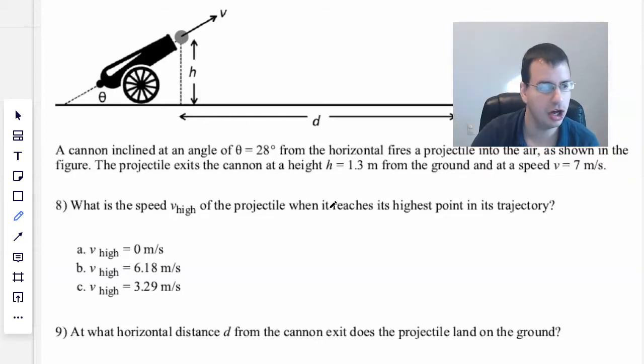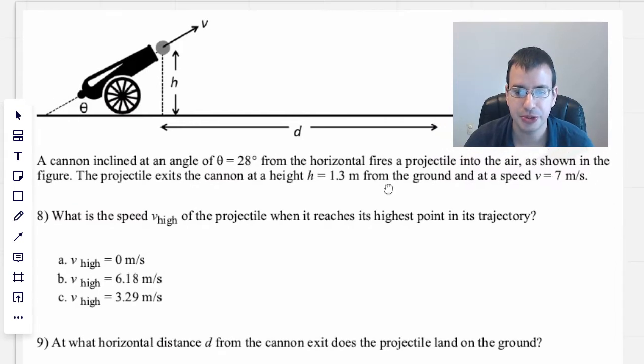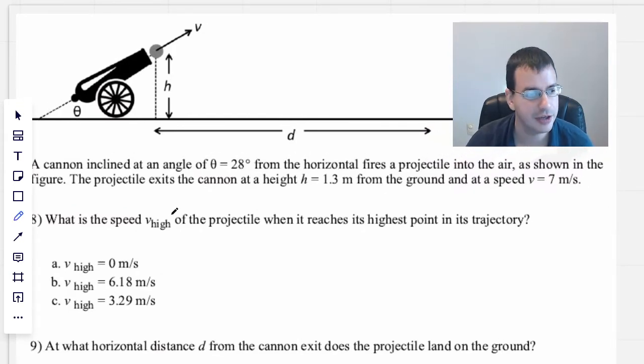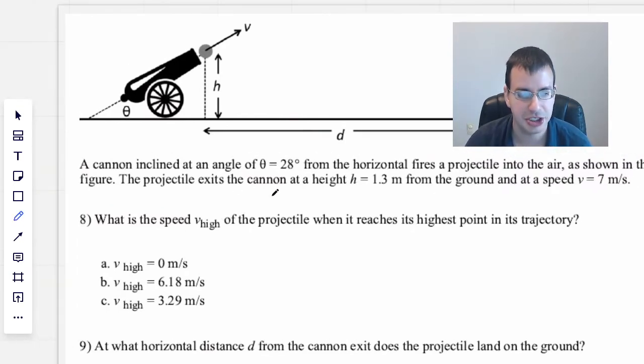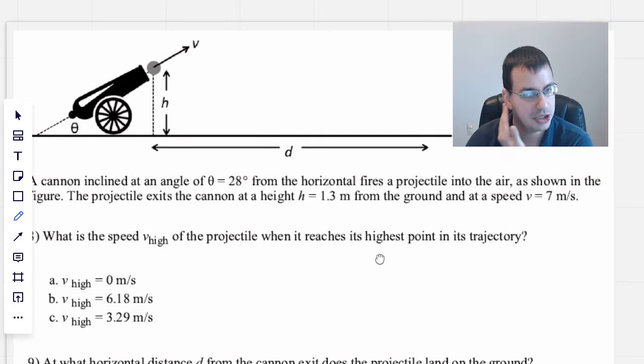A cannon inclined at an angle of theta, where theta is 28 degrees, from the horizontal fires a projectile into the air as shown in the figure above. The projectile exits the cannon at a height of 1.3 meters from the ground and at a speed of 7 meters per second.